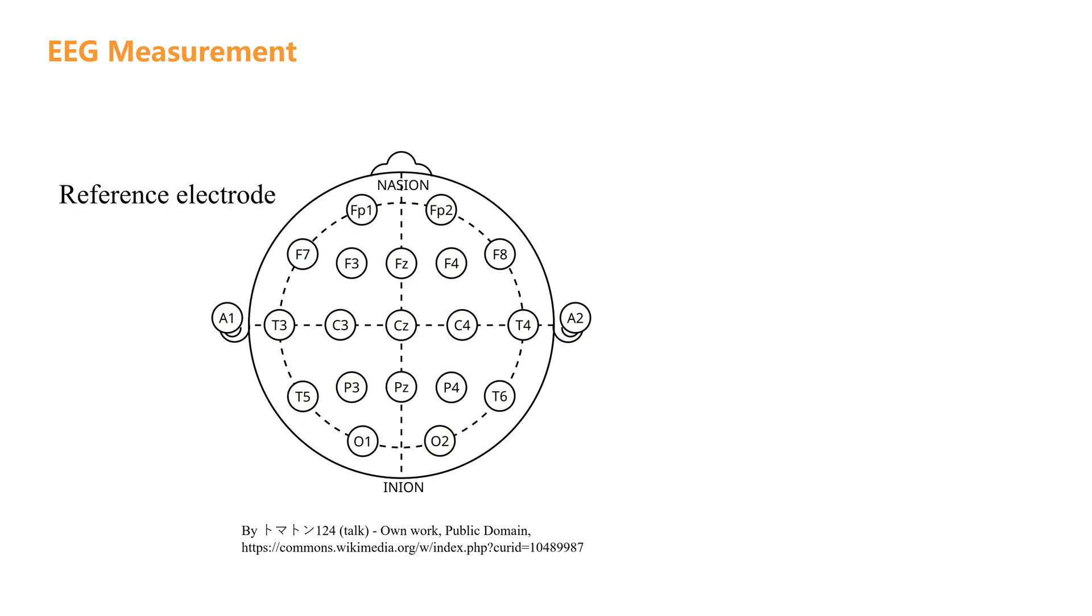Next, we will explain the reference electrode and why it is necessary to use one. In electroencephalography recording, the reference electrode is crucial because EEG signals are obtained by measuring the potential difference between two electrodes.